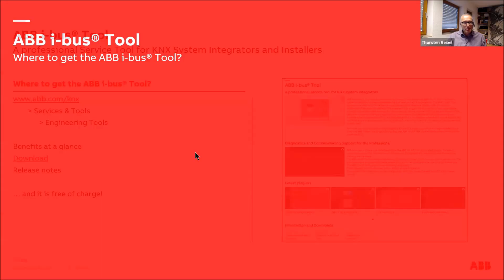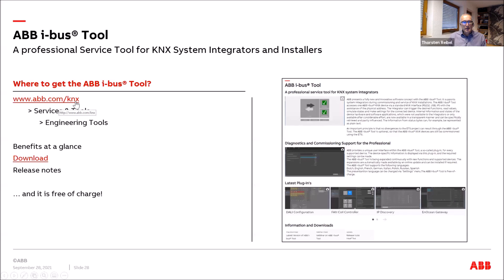Finally, the ABB iBAS tool is free of charge and available on our homepage: ABB.com/KNX. Go to Services and Tools, then Engineering Tools, and you will find the download page with a brief overview of the tool. You can also find a download link on the ABB booth at the KNX Experience. Simply download and copy it to your PC — no complex installation needed.